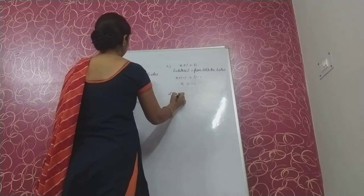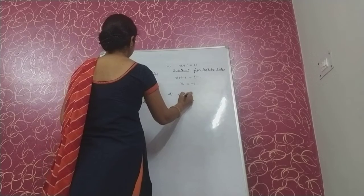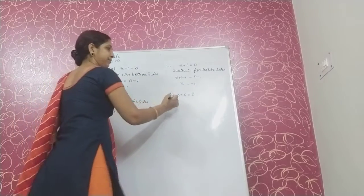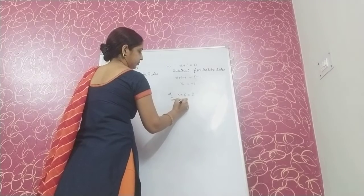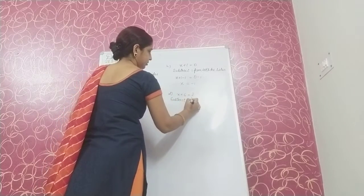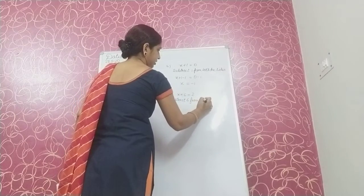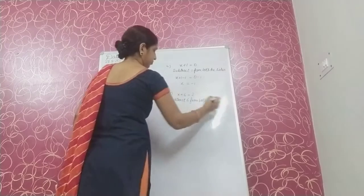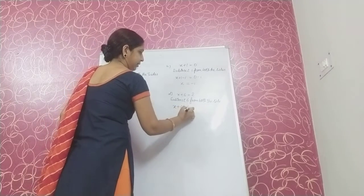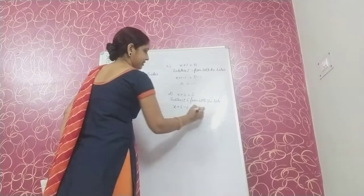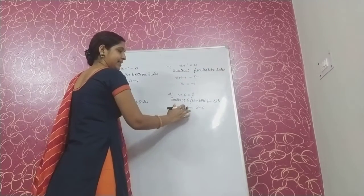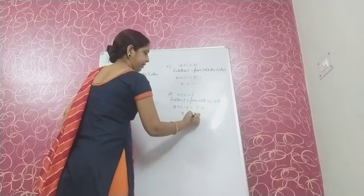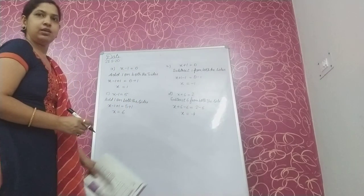Next part: x plus 6 is equal to 2. x is adding with 6, so subtract 6 from both sides. x plus 6 minus 6 is equal to 2 minus 6. On the left we have x only. On the right side 2 minus 6 is minus 4. This is the balance method.